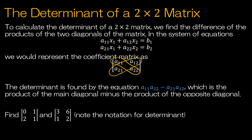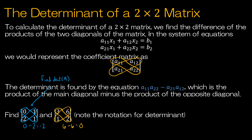Sometimes they will say find det A, which means find the determinant of A, but sometimes they'll just show absolute value brackets and you'll have to know that means find the determinant of that matrix. For my first matrix, I would take 0 times 1, which is 0, and 2 times 1, which is 2, so 0 minus 2 is negative 2. For my second, 3 times 2 is 6, and 1 times 6 is 6, so the determinant is 0.